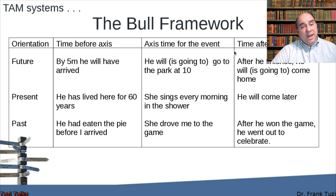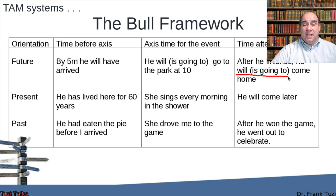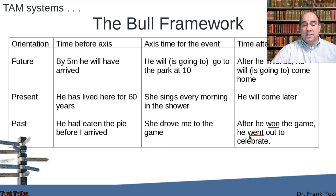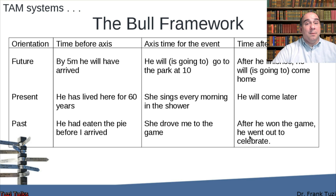There is also a time-after axis: "After he finishes, he will go" — that's a time after a time. And in the past: "After he won, he went" — again two different times. So in English, you can play with all these different tenses, but they fall into some sort of predictable order or time slot.